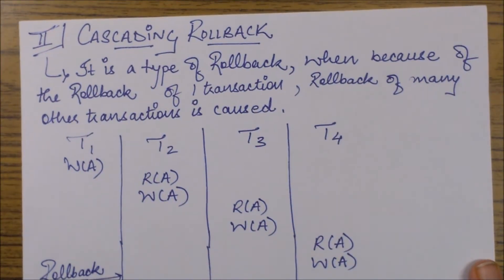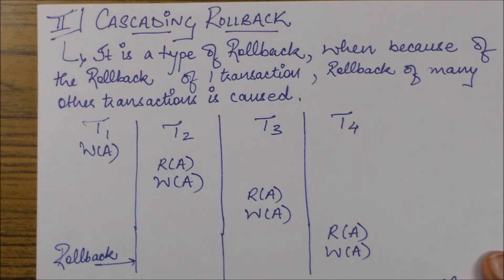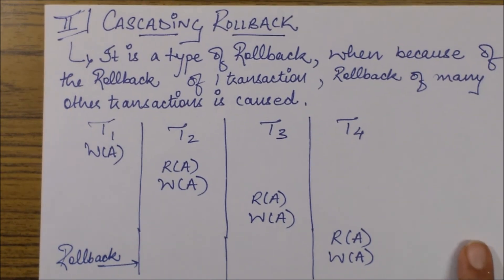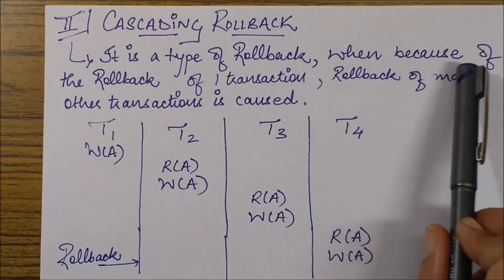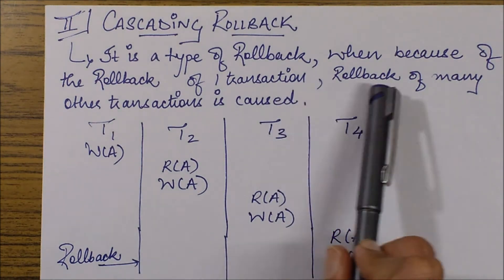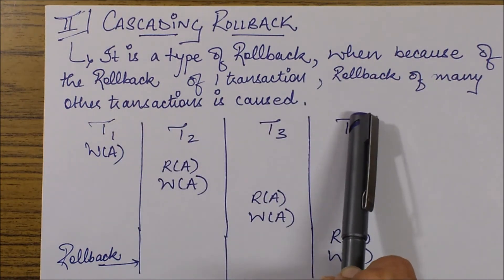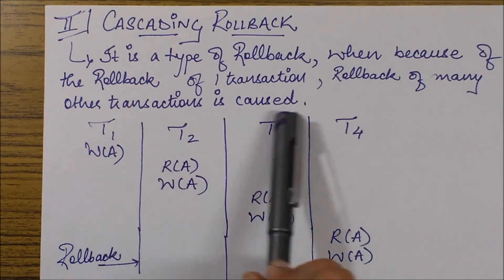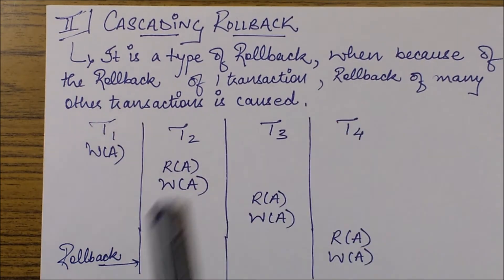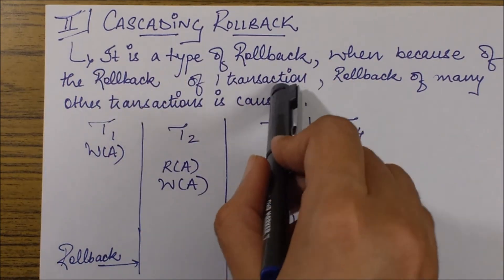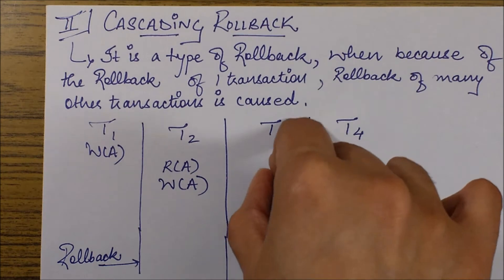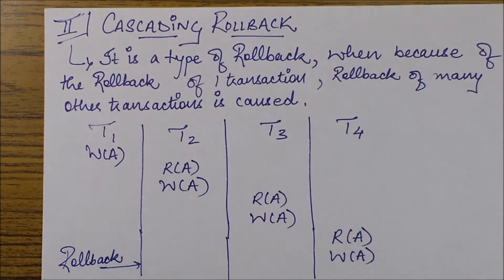Let's move to the next level: cascading rollback, or cascadeless recoverable schedule. A cascading rollback is a type of rollback where, because of the rollback of one transaction, the rollback of many other transactions is caused. Since rollback of many transactions is possible here, the problem is not impossibility — it is the unnecessary wastage of CPU resources caused by rolling back many transactions due to just one. Let's see an example.